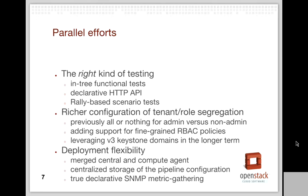Another area is tenant segregation configuration. Currently there's an all-or-nothing model between admin users and non-admin users. Admin users are omniscient, seeing everything in Ceilometer, while normal users can only see data associated with resources they own. We want a much more nuanced model using OpenStack's role-based access control mechanism and leveraging forward-looking Keystone features including domains — so the administrative role isn't necessarily global but can be partitioned between different user groups.